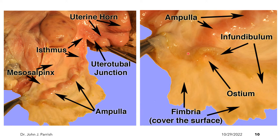On the right side, we have the presence of the infundibulum and the ostium of the infundibulum, where the egg will enter after ovulation. We also have the fimbriae covering the surface of the infundibulum, which functions to catch or capture the oocyte at ovulation and transport it into the ostium. The junction between the uterus and the oviduct is the uterotubal junction.